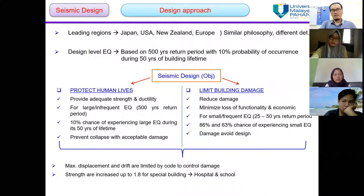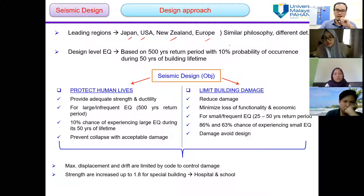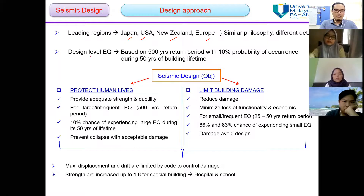The leading regions in seismic design codes are Japan, USA, New Zealand, and Europe. They use similar philosophy but different design approaches. The design level of earthquake is based on a 500-year return period with a 10% probability of occurrence during the 50-year building lifetime.